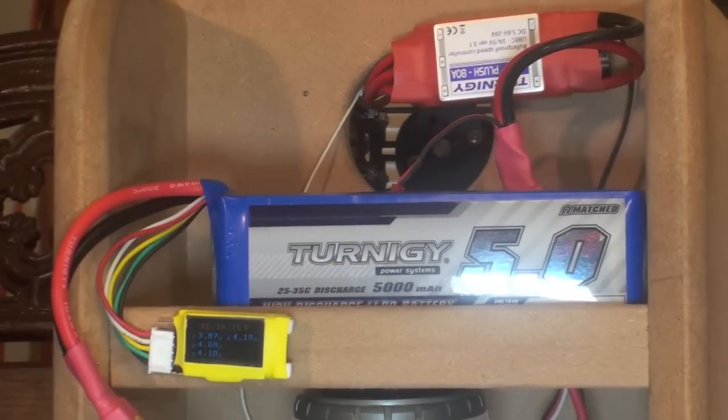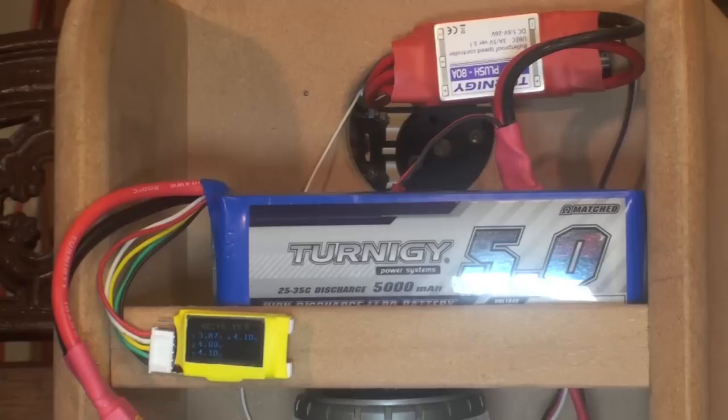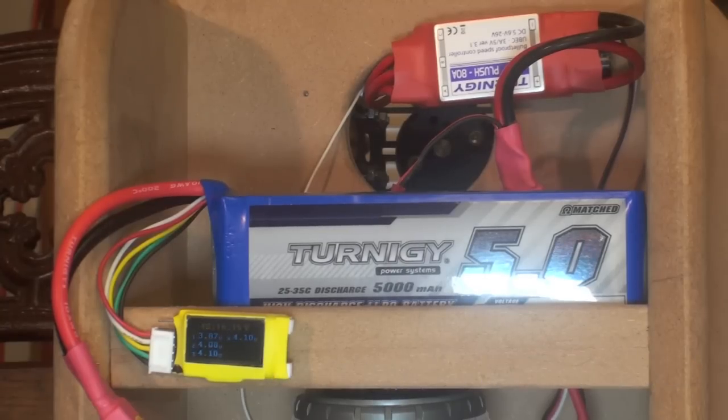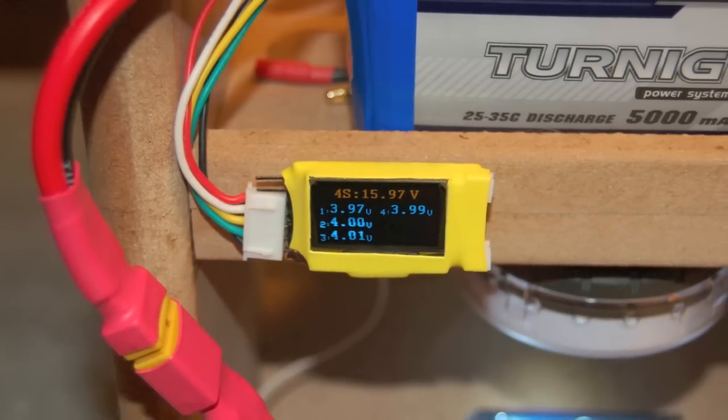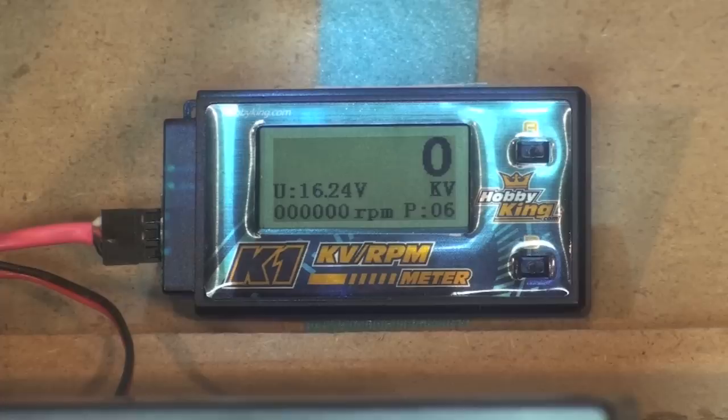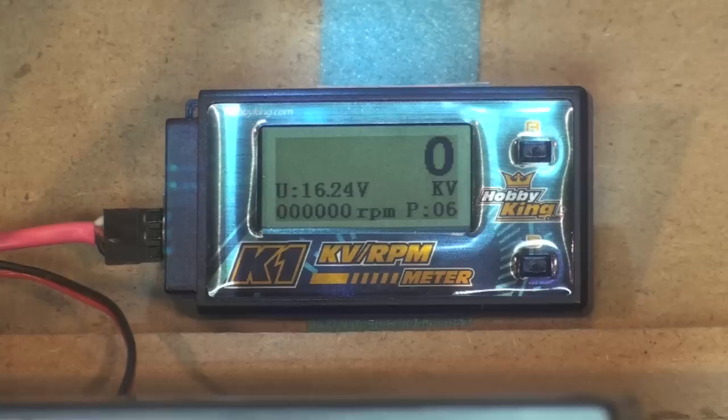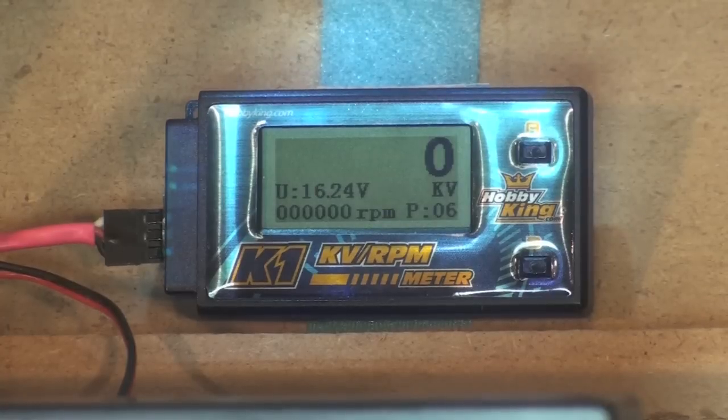First off I'm using the Turnigy plush 80 amp ESC and a Turnigy 4S 5000 25 to 35 C battery. I monitor the voltage with the Aloft Hobby's voltage meter. I use the K1 KV RPM meter from Hobby King to monitor my KV RPM readings off the motor when I'm doing these run-ups.